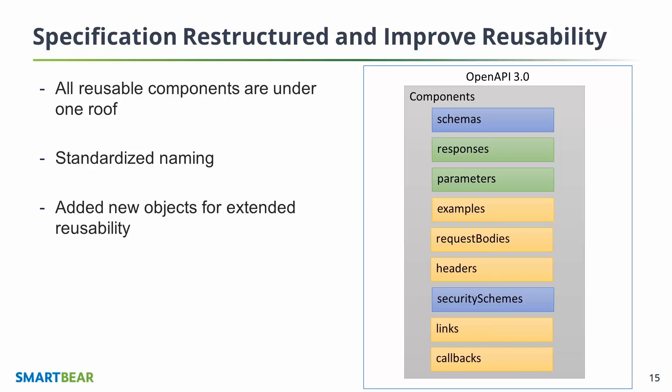If we talk about reusability, the components object now holds everything that's reusable in the spec. We increased the number of reusable objects from four to nine. Some of them are new objects introduced to the spec, which we'll cover in a bit, like links and callbacks.